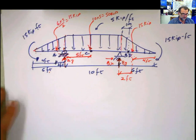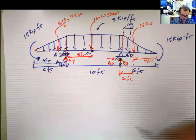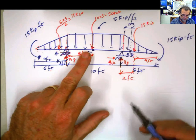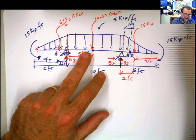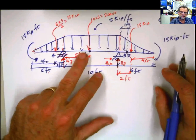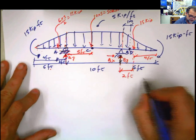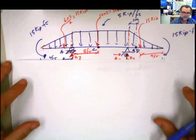Now we can start calculating our reactions. We need to do a cut at C and at D for the internal forces. I'm going to use another paper for the reaction calculation so I don't mess up this drawing.